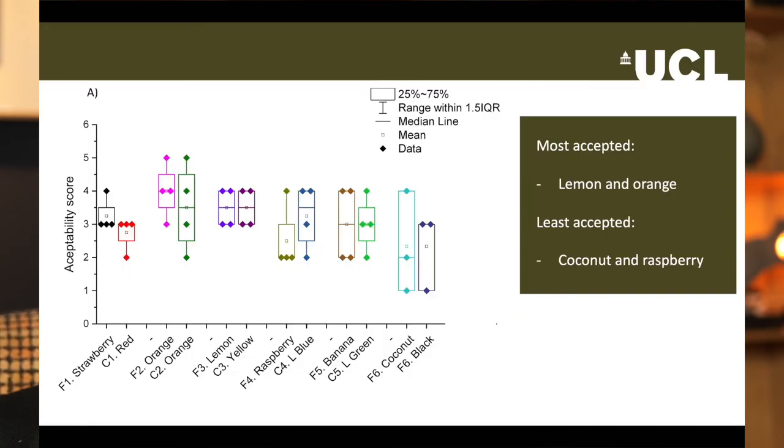Did the children prefer printed tablets or capsules? F is the code for a printed tablet and C is the code for a capsule. We asked each child to score how much they liked each using a simple scoring system. For each flavoured printed tablet, we gave them a corresponding capsule of the same colour. In the main, the chewable printed tablets were preferred over capsules in all cases bar raspberry for some reason. The other less popular flavour was coconut, which I totally get.